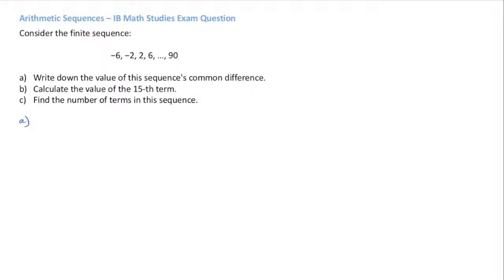To begin with, to write down the value of the sequence's common difference, well really it's all about knowing the definition of the common difference. The common difference is the amount we add to each term in an arithmetic sequence to get from one term to the next. So here we can see that our sequence goes negative 6, negative 2, 2, 6, etc, all the way up to 90.